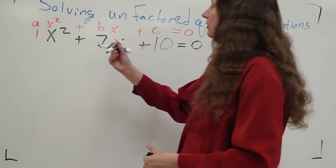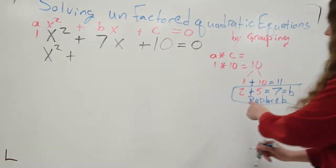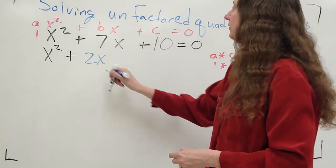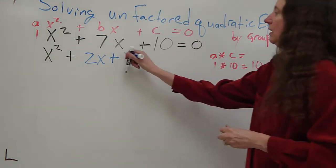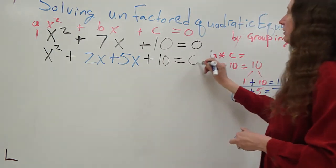So now I have x squared plus 2x plus 5x plus 10 equals 0.